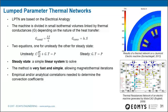Lumped parameter thermal networks (LPTN) are based on the electrical analogy: the machine is divided into small isothermal volumes linked by thermal conductances depending on the nature of the heat transfer — conductive conductance and convective conductance. In steady state, the equation becomes a simple linear system, easy to solve. LPTN is very fast and simple to implement. However, empirical and analytical correlations are needed to determine the convective coefficients H.